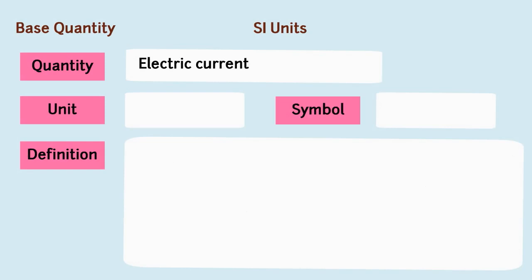Electric current. SI unit of electric current is ampere.